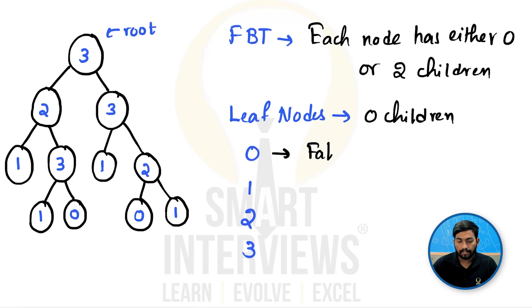Here 0 means false, 1 is true, 2 is OR, 3 is AND. Leaf nodes will contain the values of 0 and 1 and rest of the nodes will have the values 2 and 3. Now what you have to do is you will have to evaluate the entire value of this given tree. So the output will be either true or false.